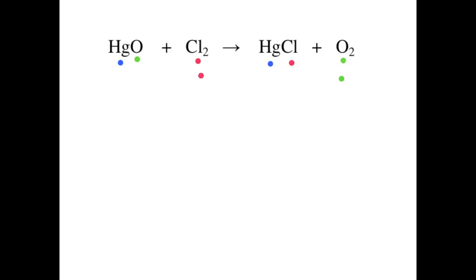In order to balance out this equation, you would have to use the coefficient of two. You would put that coefficient in front of the HgO, which would give you two mercury and two oxygen. The oxygen is now balanced on both sides. Now you have to balance out the mercury, which you would have another coefficient of two, putting it in front of the HgO, which would give you two mercury and two chlorine. This equation is now balanced.